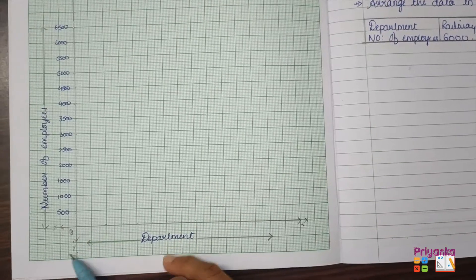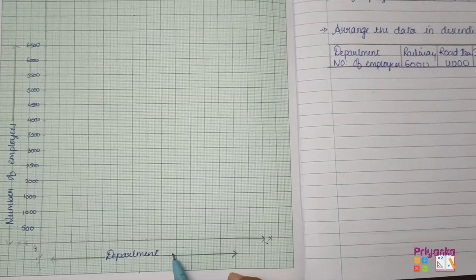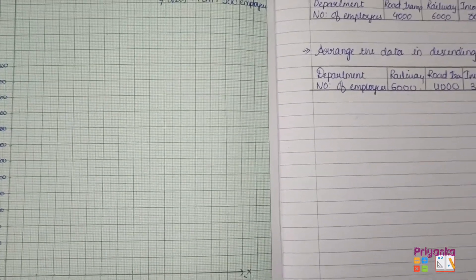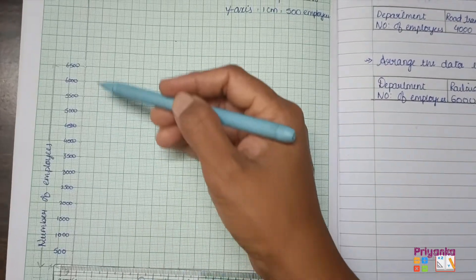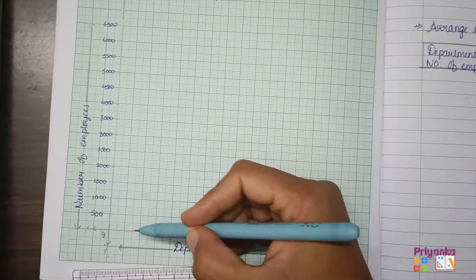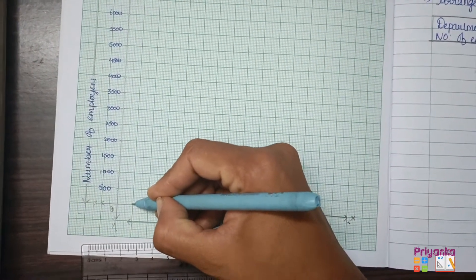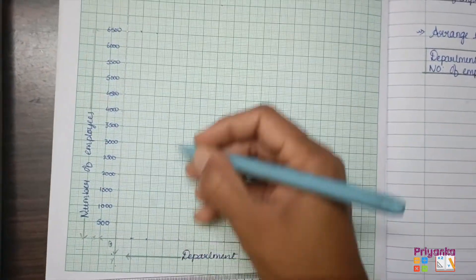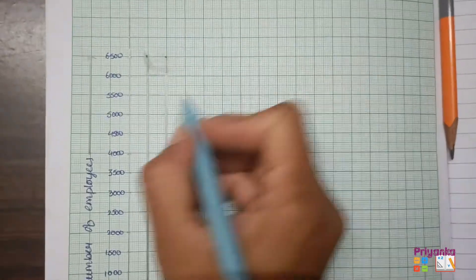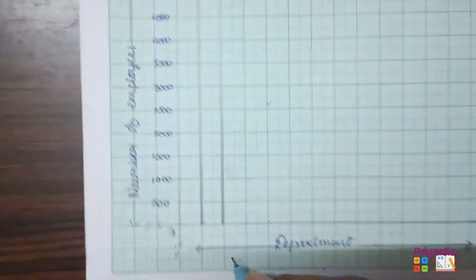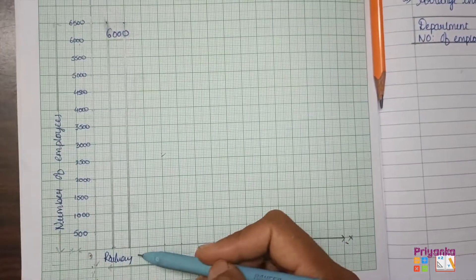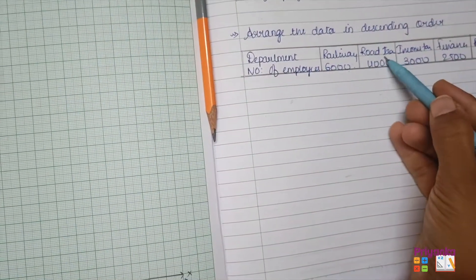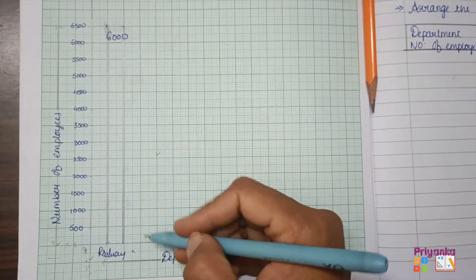On the x-axis show the department. The next step is to take your scale and find the first bar: Railway with six thousand employees. Find six thousand on the y-axis and draw a bar from the baseline up to six thousand. This completes the first bar showing six thousand employees in the department of Railway.